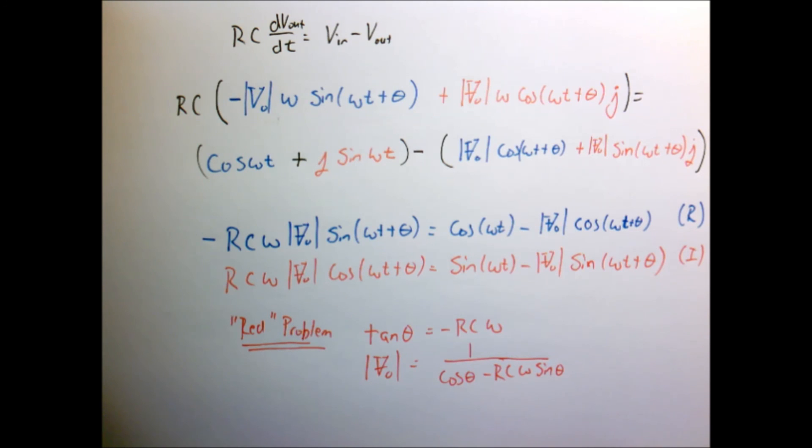Now it might not be surprising to you that the solution to the blue problem should actually be the same because what was stopping us from assuming that the input was a cosine rather than a sine? Because what's the difference? It's only just a shift of 90 degrees. So the answer that we get for a sine should be the same one we get for a cosine.